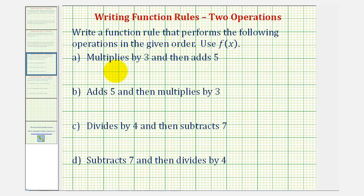So if we're using f(x) as our function, notice that x would be the input. So to multiply by three, we'd multiply x by three, which would be three times x or 3x. And then we'd add five to this, so we have 3x + 5. This would be our function rule.